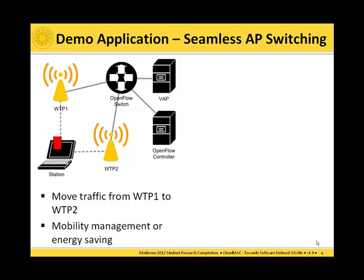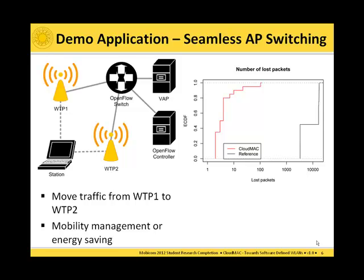First, packets are sent via wireless termination point one. In the next step, the control application at the OpenFlow controller issues a command to the OpenFlow switch to change the rule, and then packets are sent via wireless termination point two. It is very simple to implement handovers this way. We tested how many packets get lost during handover with CloudMac versus a normal wireless LAN reference network. As you can see, the number of lost packets reduces drastically with CloudMac — from a median of roughly 10,000 packets down to 3.5 packets. The remaining 3.5 packets are those in flight or in hardware queues, which we simply let drop.